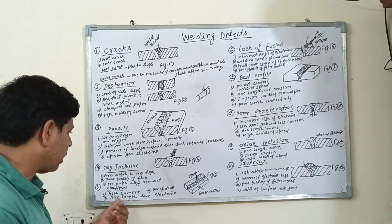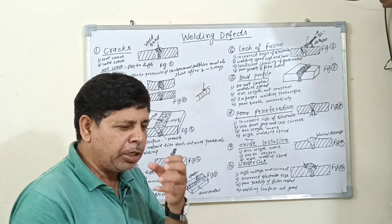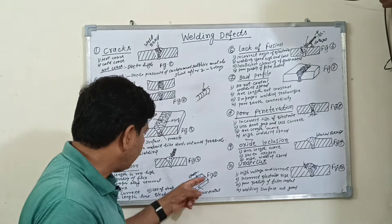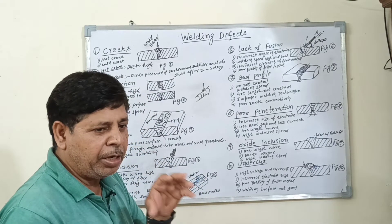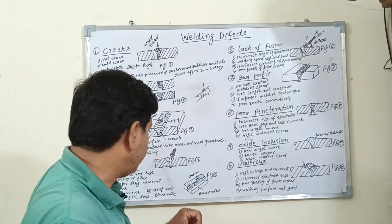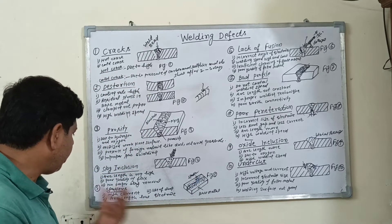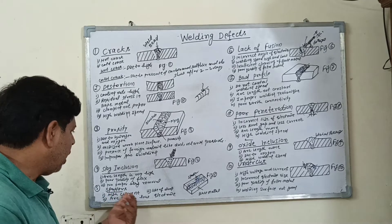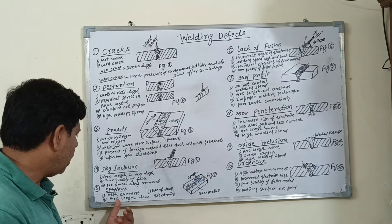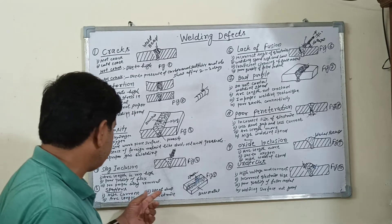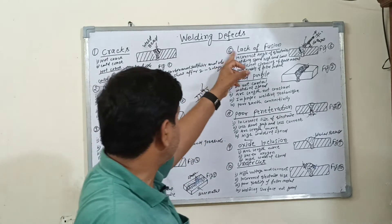Number five is spatter. Spatter means that very small material parts are spread along the welding bead, meaning the welding bead does not appear to be good quality. The reasons include slag, different types of pressure variations such as high voltage current, arc length being too low, and use of a damp electrode.